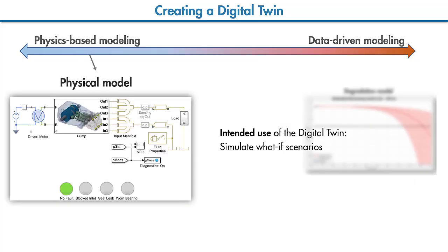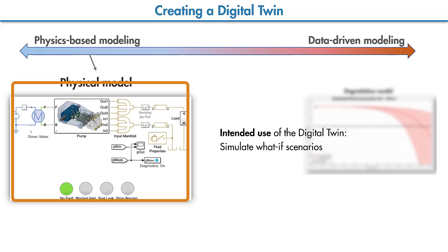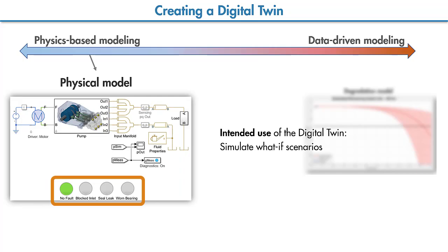If our intended use of the digital twin is different — let's say we want to simulate future scenarios and monitor how the fleet will behave under those scenarios — then we can use physics-based modeling. An example would be a physical model like this one, which is created by connecting mechanical and hydraulic components together. This model is fed with data from the pump, and its parameters are estimated and tuned with this incoming data to keep the model up to date. Using this model, you can inject different types of faults and simulate the pump's behavior under different fault conditions.